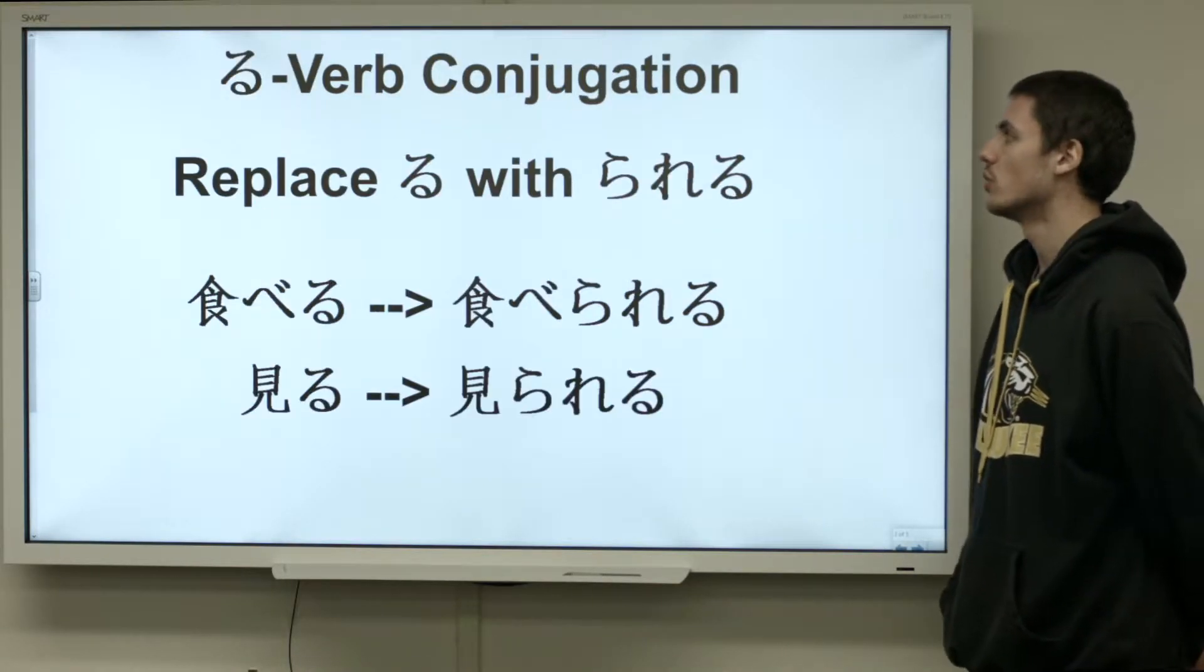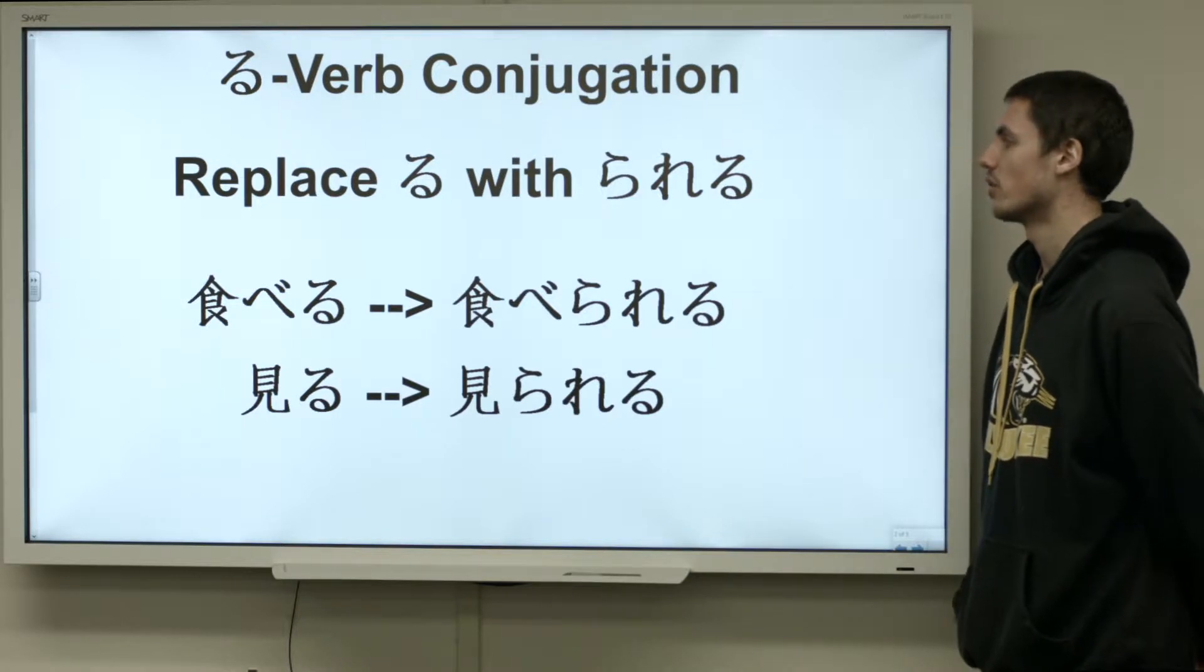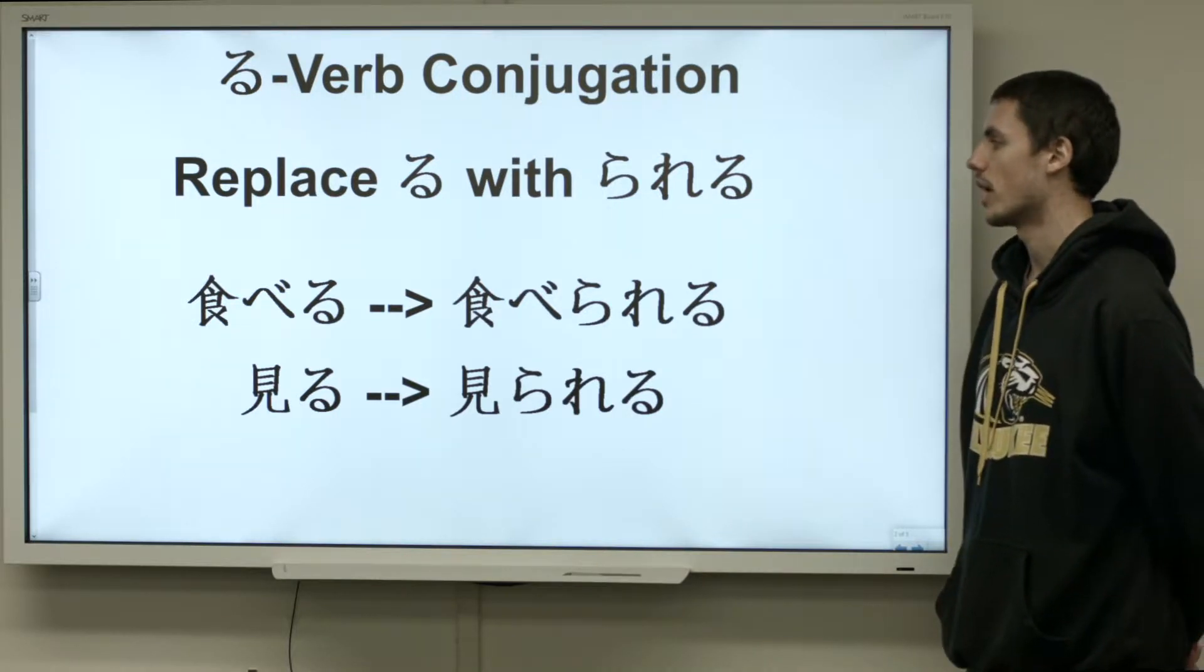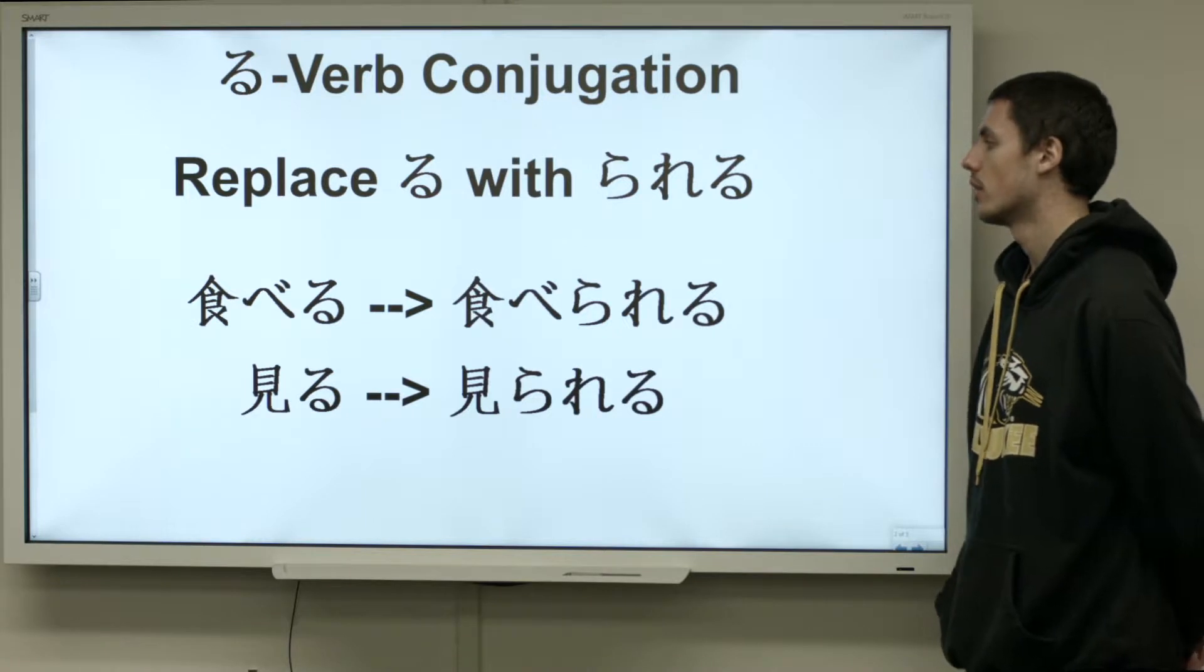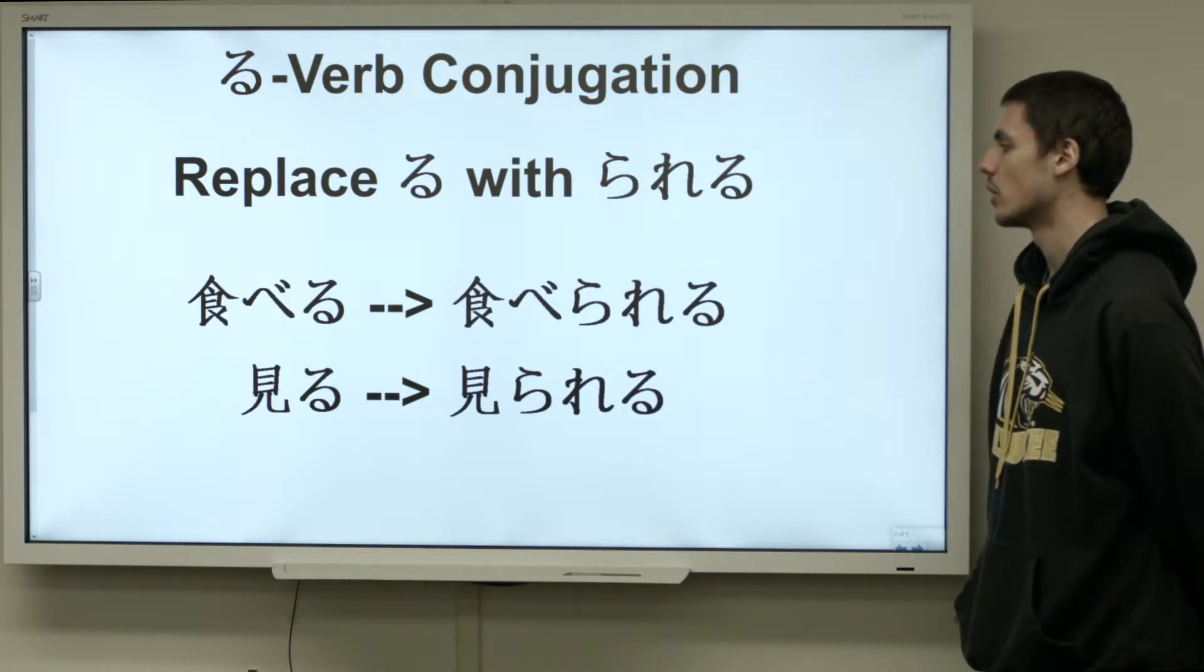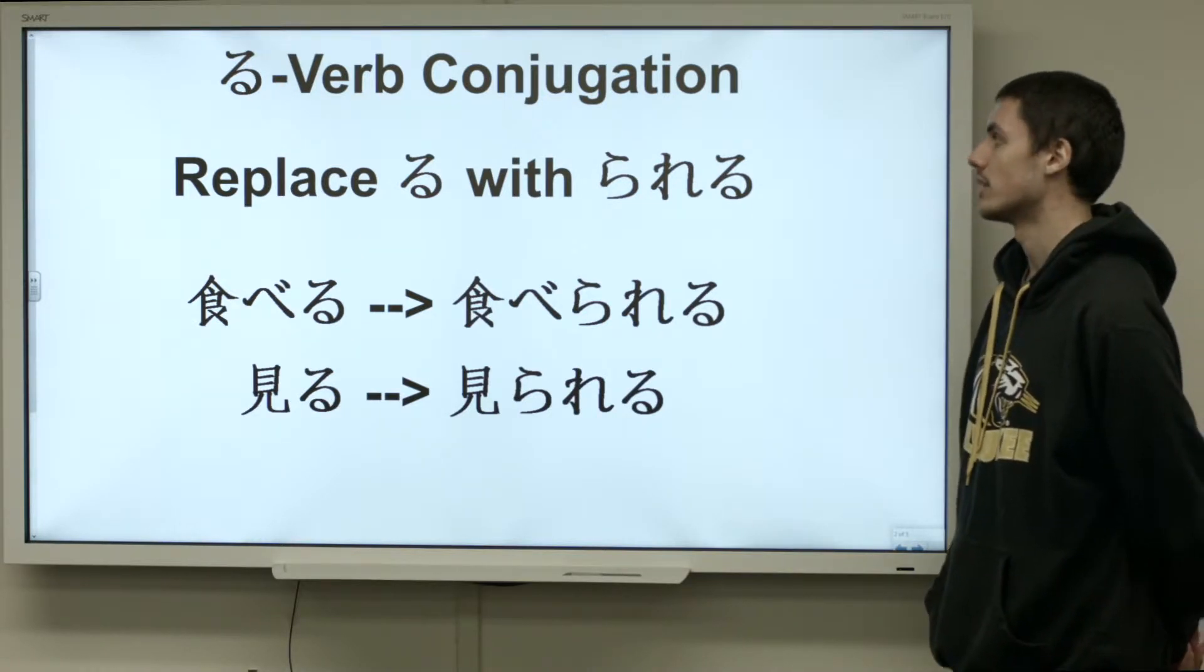So, when you want to change ru verbs into the potential form, you replace ru with rareru. Taberu becomes taberareru, and that is to be able to eat. Miru becomes mirareru, to be able to see.